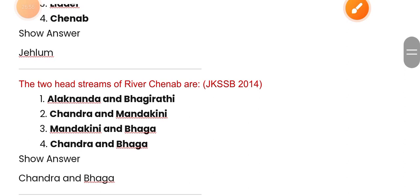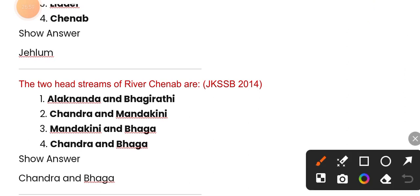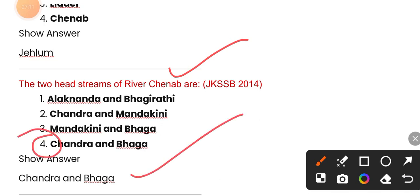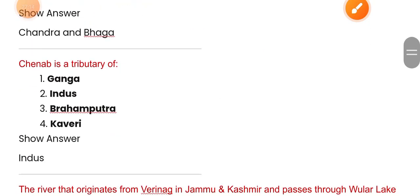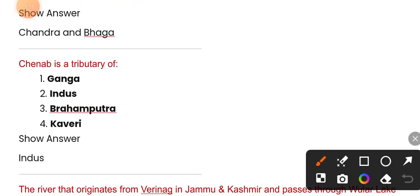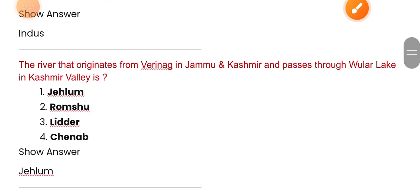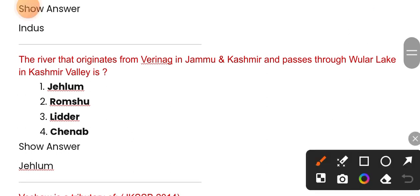The two head streams of the Chenab river are Chandra and Bhaga. Chenab is a tributary of the Indus. The river that originates from Brinag in Jammu and Kashmir and passes through Wular Lake in Kashmir's valley.